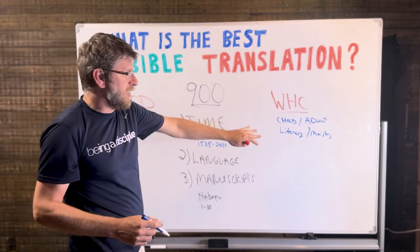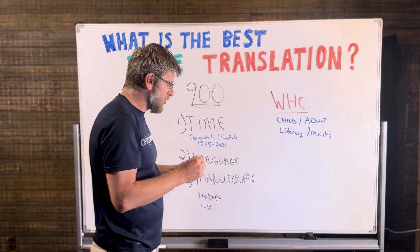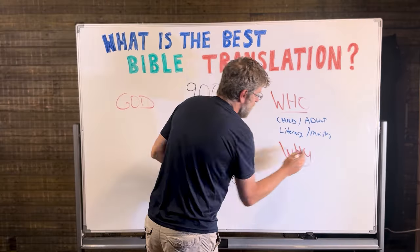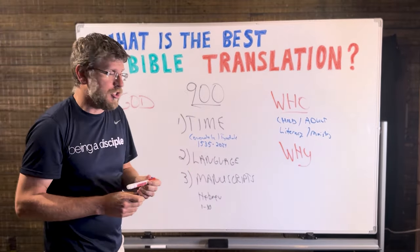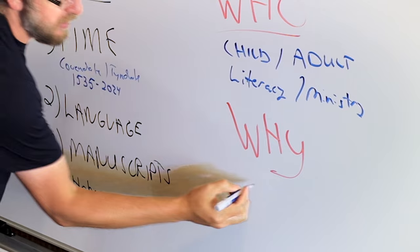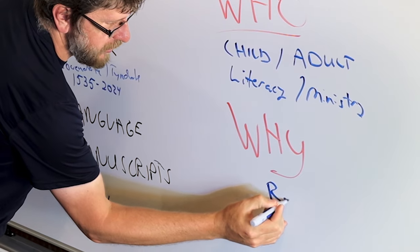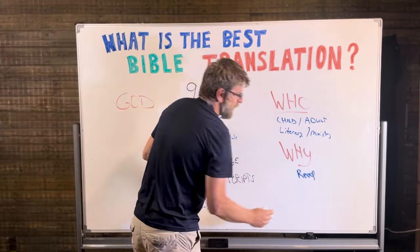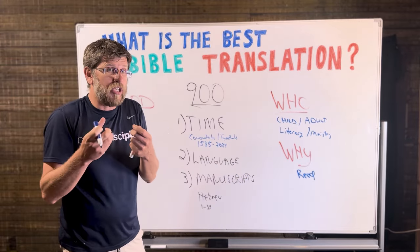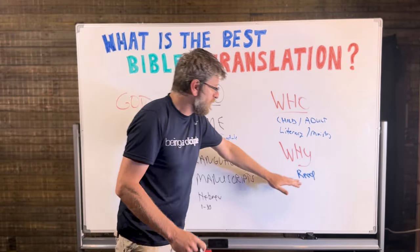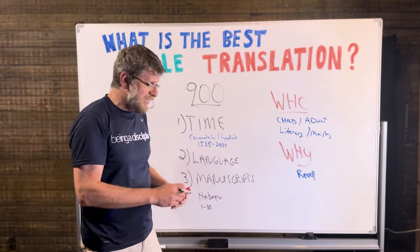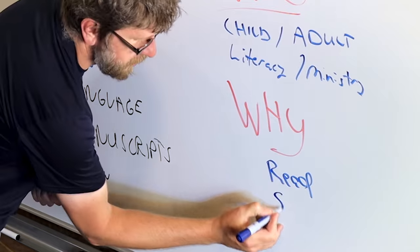If you understand who is doing it, then you can ask the second question, and that is, why? Why are you choosing that translation? And there's three key things that I want to focus on with why. One of it is, are you choosing it to read? If you are looking at a translation and wanted to use it as a book that you're going to read, you want the phrases to flow easily. You want it to be a little bit more poetic with it. That's different than if you are studying the text.